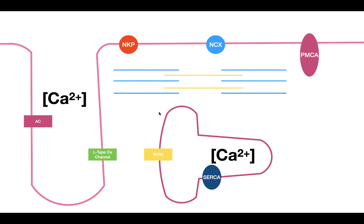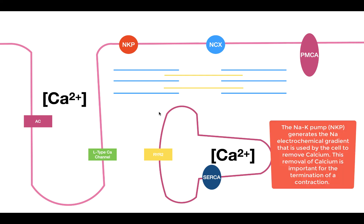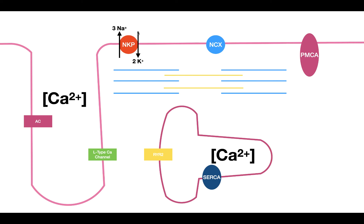Before we talk about how excitation-contraction coupling occurs, I want to bring up the sodium-potassium pump. The sodium-potassium pump pumps three sodiums out of the cell and two potassiums into the cell. The result is that the inside of the cell has a low sodium concentration and a high potassium concentration. This sodium concentration gradient is going to be very important for removing calcium from the cell, and we'll get to that shortly.